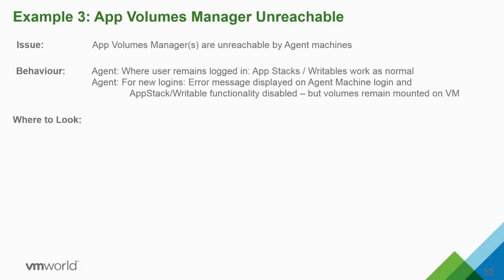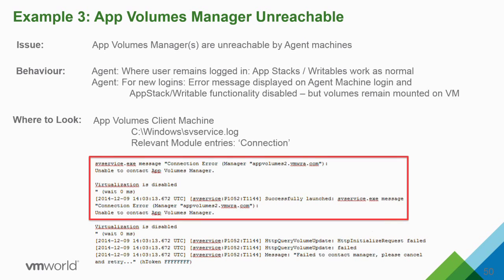If the App Volumes Manager can't be reached by the agent: users who are already logged in with App Stacks mounted will continue working, but new logins will get an error message — likely 'virtualization unavailable' — and nothing will be mounted. Look at the svservice.log on the agent machine for entries like 'virtualization is disabled' or 'can't contact the App Volumes Manager' to confirm it's a connectivity problem.